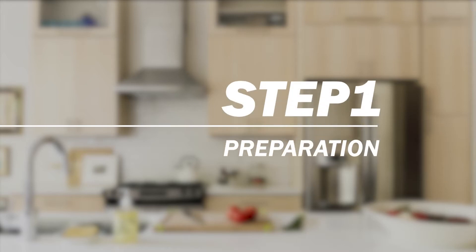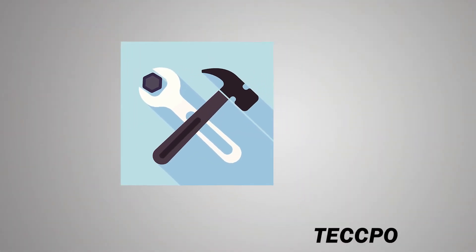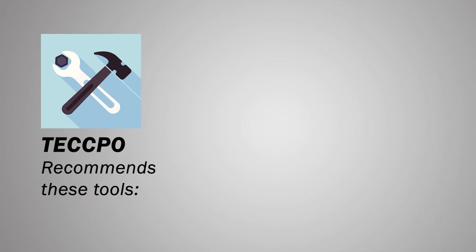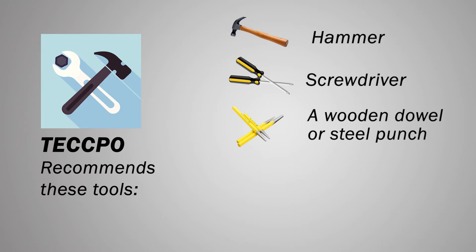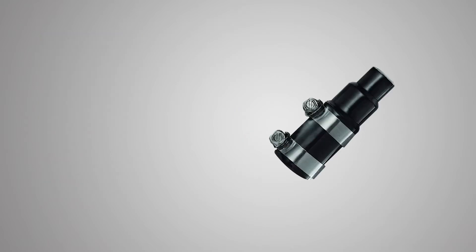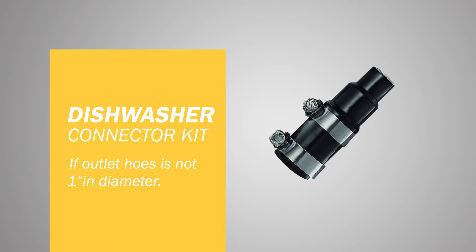Step 1: Preparation. For safe operation, TakePol recommends using a hammer, Phillips screwdriver, a wooden dowel or steel punch, racks, and work gloves if desired. If there is a dishwasher and the dishwasher outlet hose is not 1 inch in diameter, you will need to purchase a dishwasher connector kit.